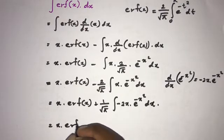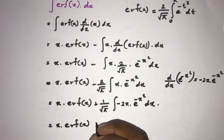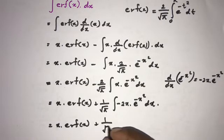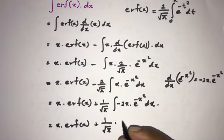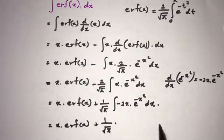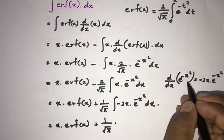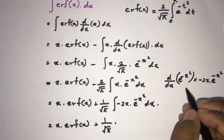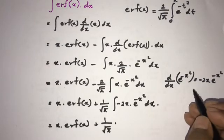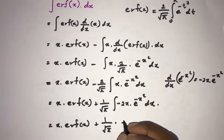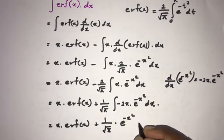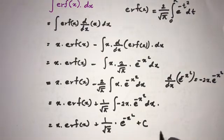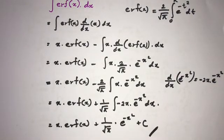Since differentiation and integration are inverse processes, the integral of minus 2x e to the minus x squared equals e to the minus x squared. Therefore, the final answer is x times erf(x) plus 1 over square root of pi times e to the minus x squared plus C. If you like this video, please subscribe to this channel. Thank you for watching.